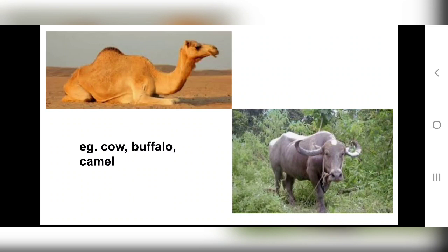These animals have more than one stomach, unlike us who have just one. So what they do is: when they eat grass, they take it into one stomach with a rough nibble. Then when they are free and relaxed, they bring this food back into their mouth and chew it carefully into fine pieces using their strong, broad back teeth — grinding it like a paste — and then swallow it again.